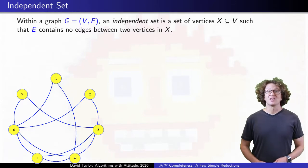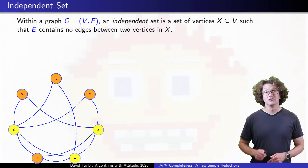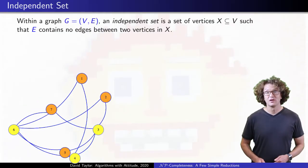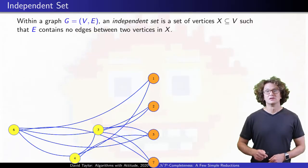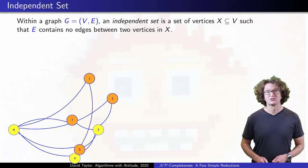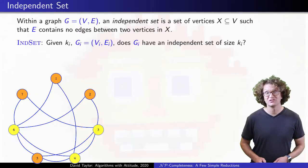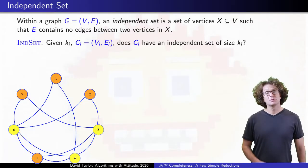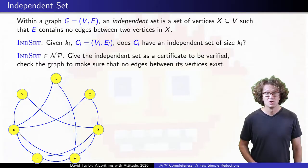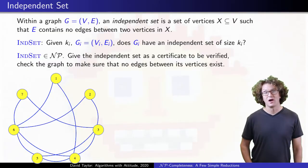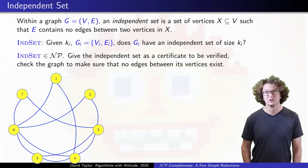Within an undirected graph, an independent set is a set of vertices with no edges between them. If edges model dependencies of vertices, everything in the independent set will be pairwise independent. The independent set problem asks if there is an independent set of a given size in a graph. The independent set problem is in NP. If we give the independent set of size K as a certificate, we can write a polynomial time algorithm to verify that the graph doesn't have any edges between any pair of vertices in that set.